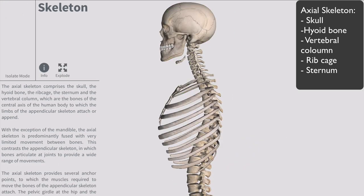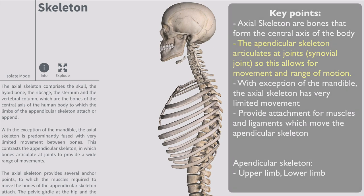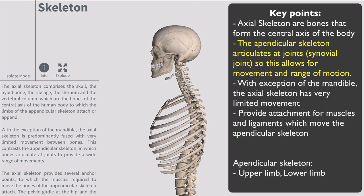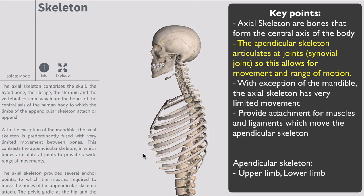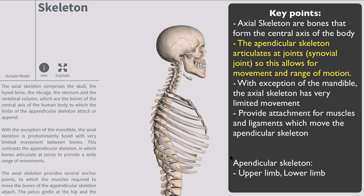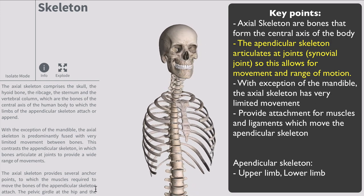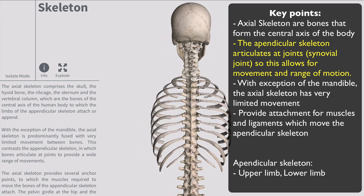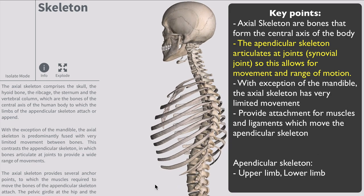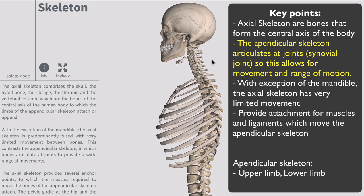A few key points about the axial skeleton: these are bones that form the centre axis of the body. The appendicular skeleton, on the other hand, articulates joints like synovial joints, which allow for a range of movements involving the upper limb and lower limb. The only exception for the axial skeleton is the mandible, because it's the jaw and it moves a lot.